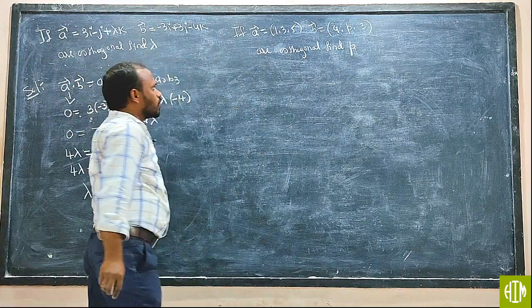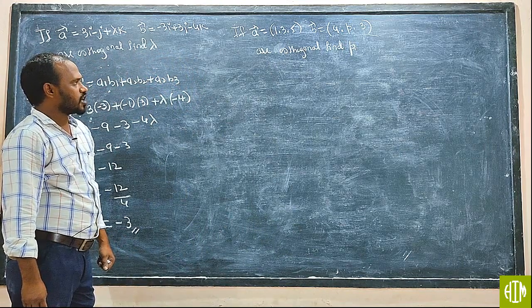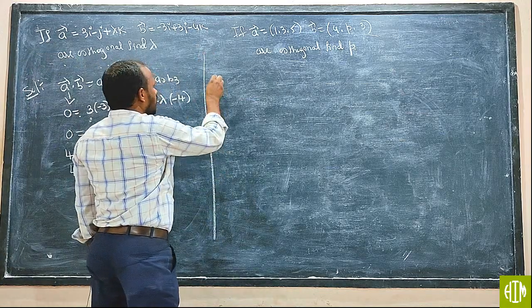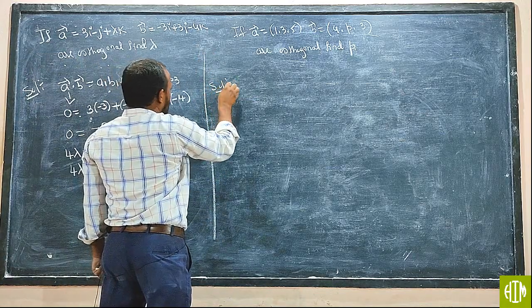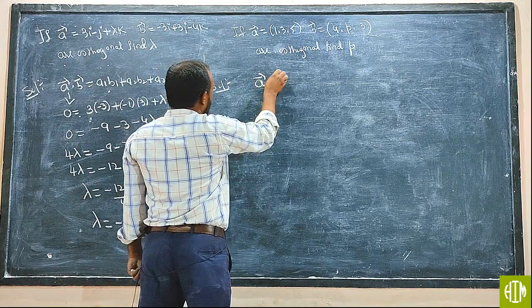If A vector is equal to 1, 3, 5, B vector is equal to 4, P, 3, find P. For orthogonal or perpendicular vectors, A vector dot B vector equals 0.